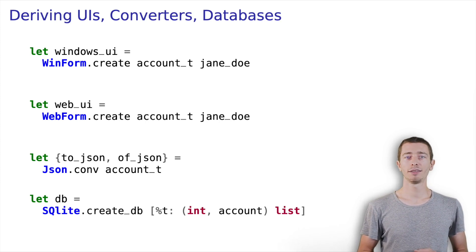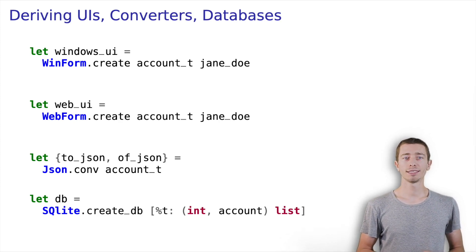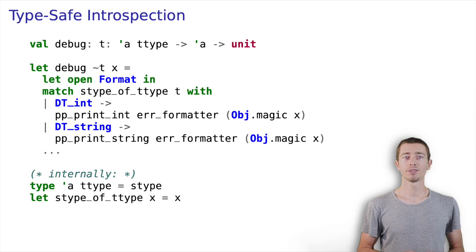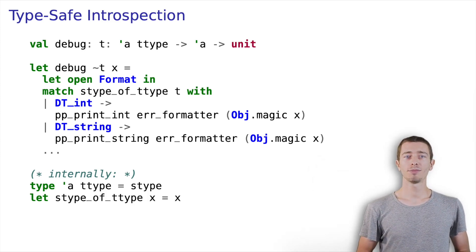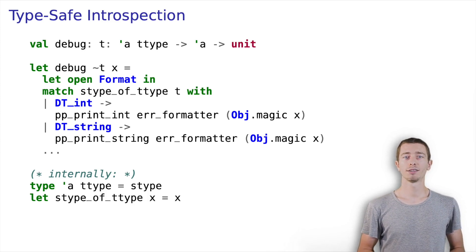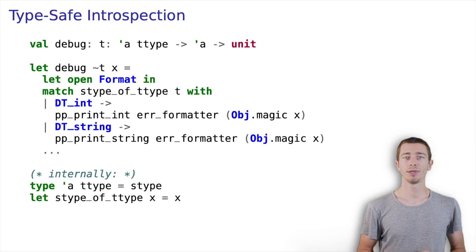We can also derive database schema and database interfacing code. Now that we know why runtime types are useful, let's have a look at some technical aspects. We have seen this example before. Debug takes a runtime type — we call it ttype — and extracts type information using the function stype_of_ttype. The serializable stype is used for introspection, but it does not carry type witnesses. We have to convince the type checker about x being of a certain type using an unsafe function.